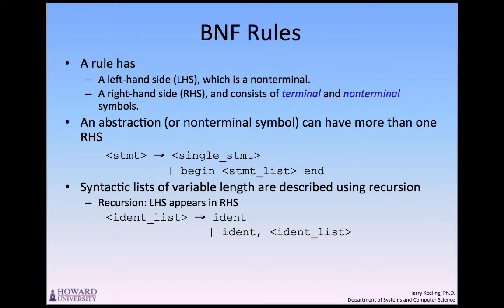A rule is considered recursive if its left-hand side appears in its right-hand side. The rule at the bottom of this slide illustrates how recursion is used to describe a list. It defines identifier-list as either a single token identifier, or an identifier followed by a comma and another instance of identifier-list. Recursion is used to describe many of the examples we will cover in this course.